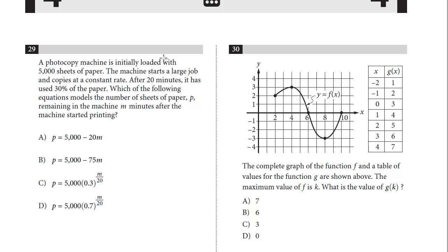A photocopy machine is initially loaded with 5,000 sheets of paper. The machine starts a large job and copies at a constant rate. After 20 minutes, it is used 30% of the paper. Which of the following equations models the number of sheets of paper P remaining in the machine M minutes after the machine started printing?